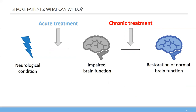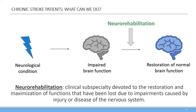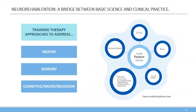So what can we do to help the majority of patients if we can only help a minority in the acute phase? What can we do about the chronic phase? This is where we get to the point of neurorehabilitation. Once brain function is impaired, the main goal of clinical care is to restore and maximize the functions that have been lost due to the neurological condition. Currently, neurorehabilitation is the only available treatment option for chronic stroke patients, and there are very few alternatives for other neurological conditions. Neurorehabilitation is the clinical subspecialty devoted to the restoration and maximization of functions that have been lost due to impairments caused by injury or disease of the nervous system. Training therapies of neurorehabilitation address motor function, sensory function, and cognitive or mood conditions.